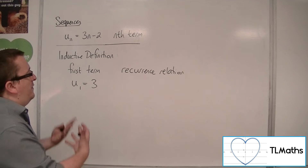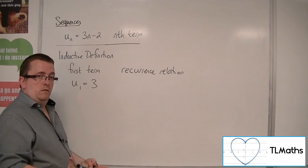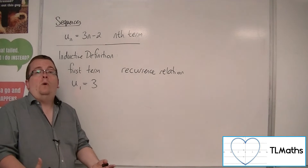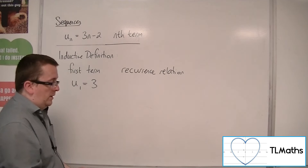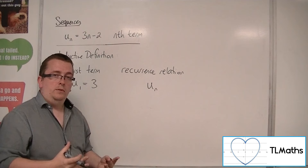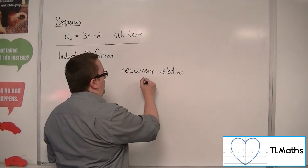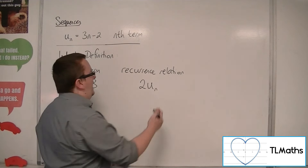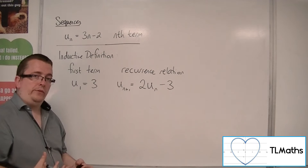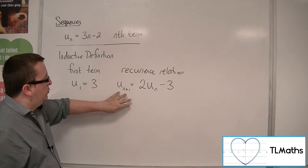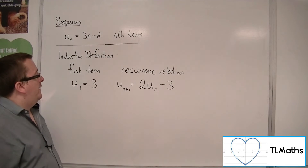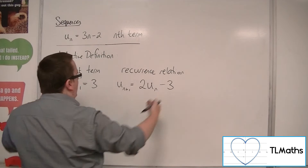So if we say that the current term is u_n — the nth term in the sequence that we've arrived at — we're going to multiply whatever that value is by 2 and then subtract 3, and that will give us the next term in the sequence. So the next term, u_{n+1}, is two lots of the previous term take away 3. Together, these form an inductive definition, because neither the first term alone nor the recurrence relation alone gives you a sequence — you need both pieces.